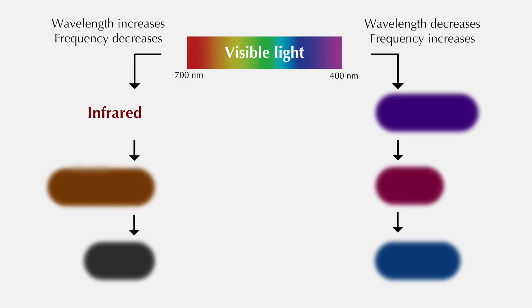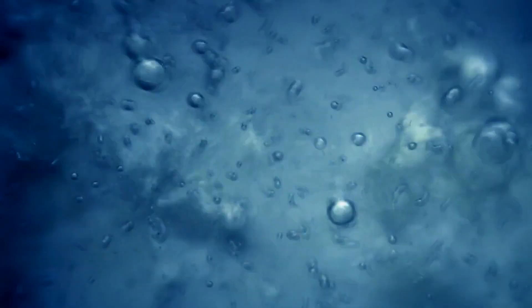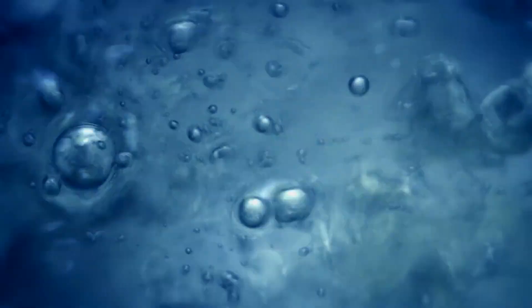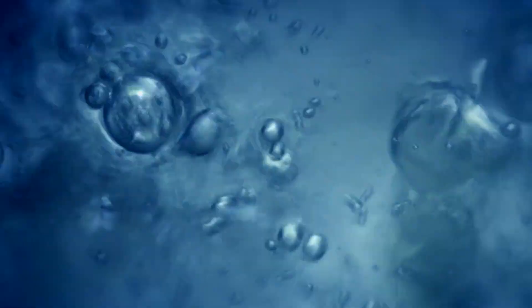Next to infrared, we have the microwave range. As you may guess, microwaves are used in microwave ovens. They exist in the right frequency range to be absorbed by water, making the water and anything around it very hot indeed.